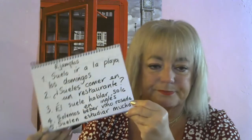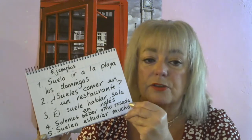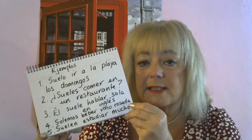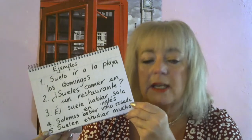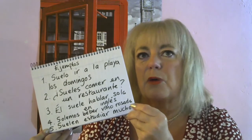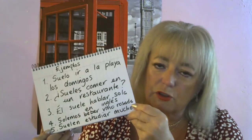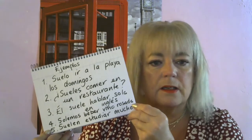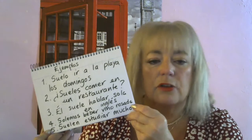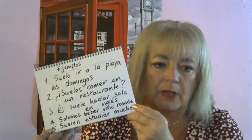So here we've got some examples. Number one: suelo ir a la playa los domingos — I normally go to the beach on Sundays. We could also say normalmente voy a la playa los domingos, but the beauty of soler is that it's the only verb you need to conjugate; everything else stays in the infinitive. Number two: ¿Sueles comer en un restaurante? — Do you normally have lunch in a restaurant? Remember, in Spain, comer means not only to eat but also to have lunch.